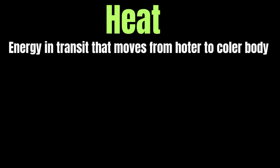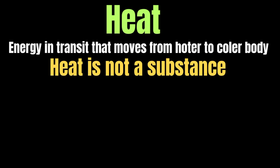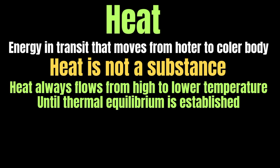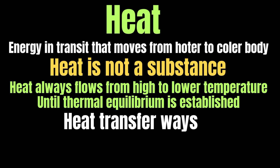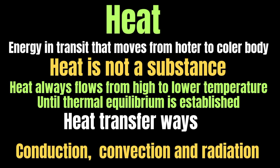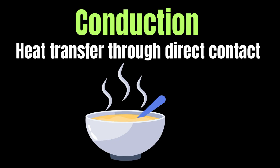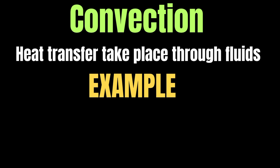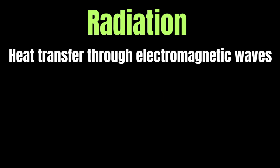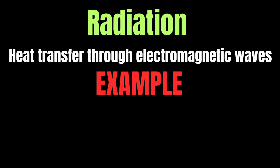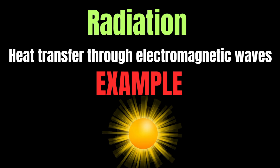Heat is energy in transit that moves from a hotter body to a cooler body due to a temperature difference. Heat is not a substance — it is simply energy flowing between objects, always from high to low temperature until thermal equilibrium is reached. Heat transfer can happen in three ways: conduction, convection, and radiation. In conduction, heat transfers through direct contact — for example, a metal spoon in hot soup becomes warm. In convection, heat transfers through fluids — for example, warm air rising in a room. In radiation, heat transfers through electromagnetic waves — for example, sunlight warming the Earth.